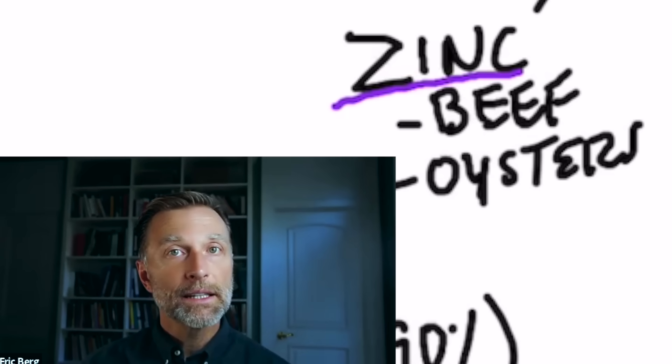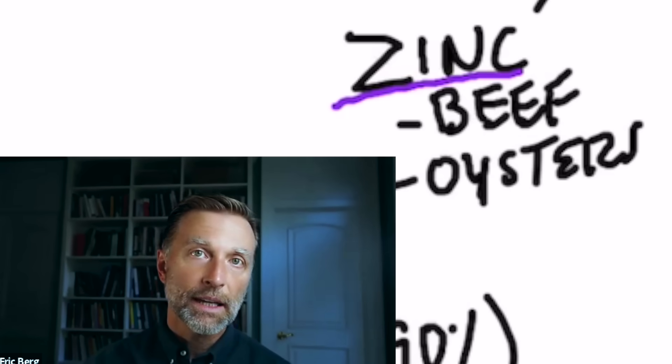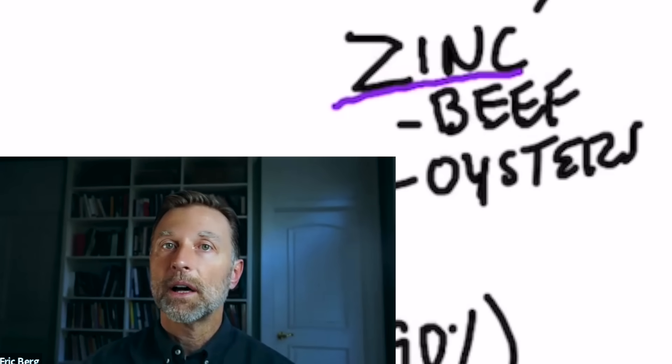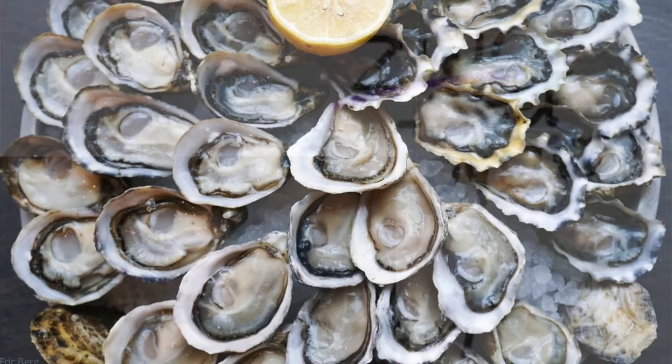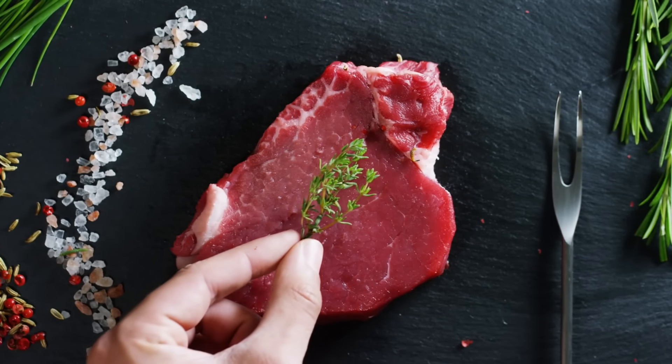You also need zinc to build acetylcholine. So if you're deficient in zinc, that could be one reason why you're not producing enough. You get zinc from shellfish as well as grass-fed beef.